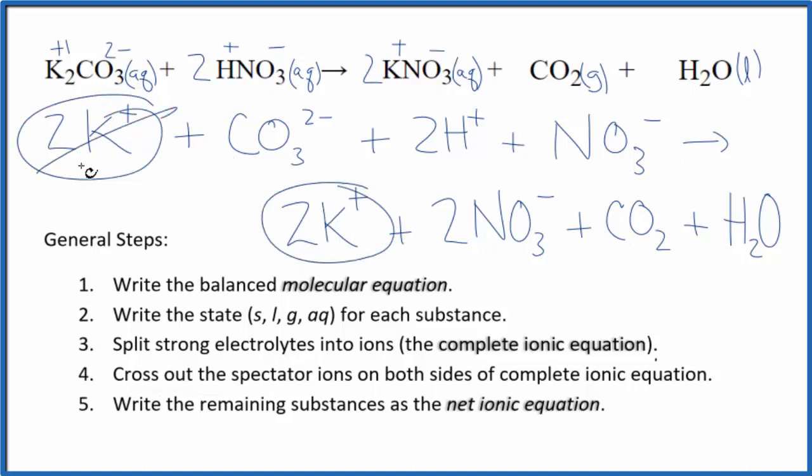And I can see here I've made a mistake, I didn't have my two go to everything, so this should be two nitrates. That makes sense. So now I have two nitrates here and two nitrates here and they cancel out. What's left is the net ionic equation for K2CO3 plus HNO3.